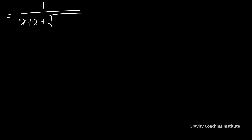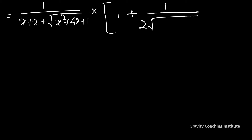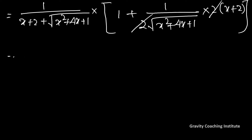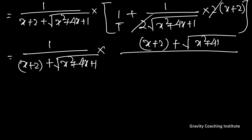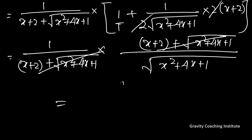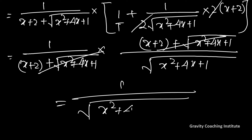So we have 1 upon (x + 2 + √(x² + 4x + 1)), multiplied by (1 + (2x + 4) / (2√(x² + 4x + 1))). Taking LCM, the numerator becomes (x + 2 + √(x² + 4x + 1)) divided by √(x² + 4x + 1). The (x + 2 + √(x² + 4x + 1)) terms cancel, giving the result equal to 1 upon √(x² + 4x + 1).